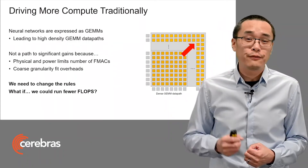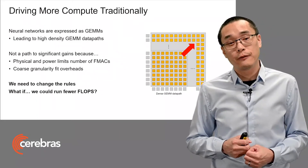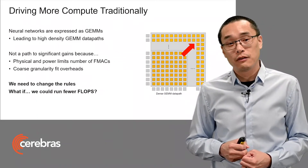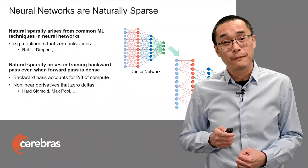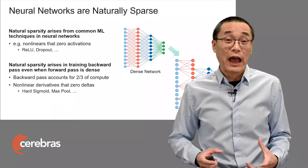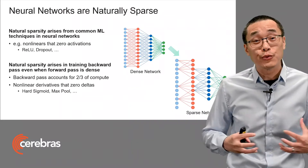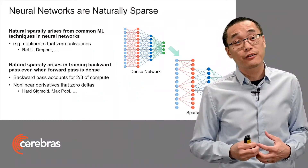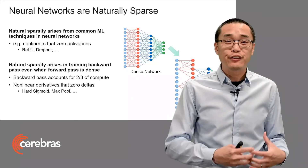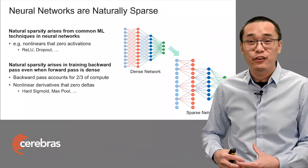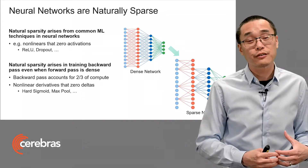What if you could get the same results but with fewer flops? It actually is possible. That's because neural networks are naturally sparse, and thinking of them as just dense GEMM matrix multiplies is really missing some fundamental properties of neural networks.